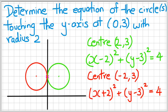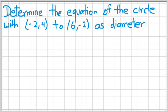Let's look at a different type of question. Determine the equation of the circle with (-2,4) to (6,-2) as diameter.